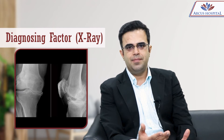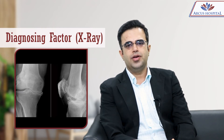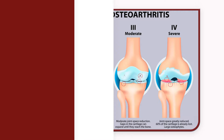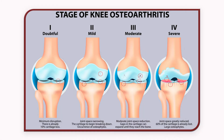The main diagnosing factor in osteoarthritis is an X-ray. When you go to your doctor, he will order X-rays for you. You can see on the screen there are various stages — stage one, two, three, four — showing how the X-rays look.